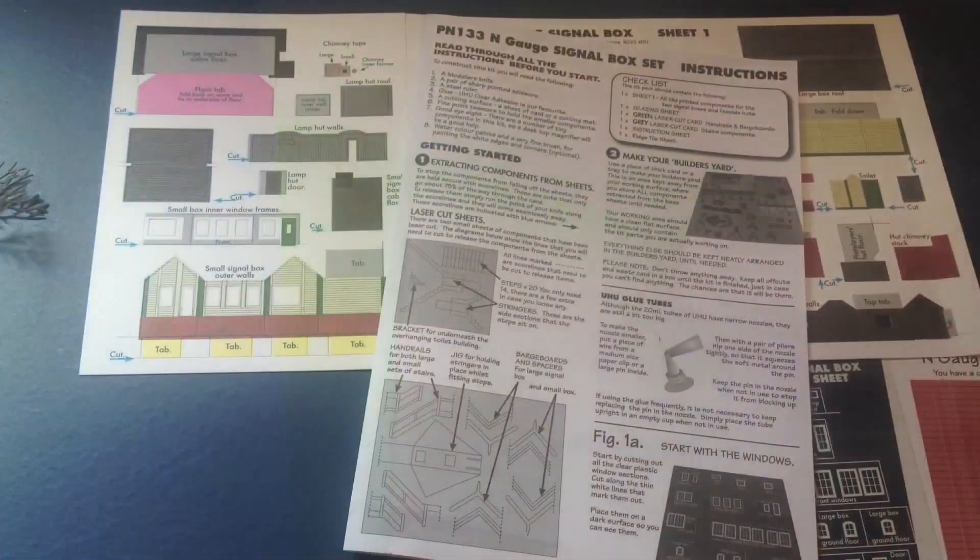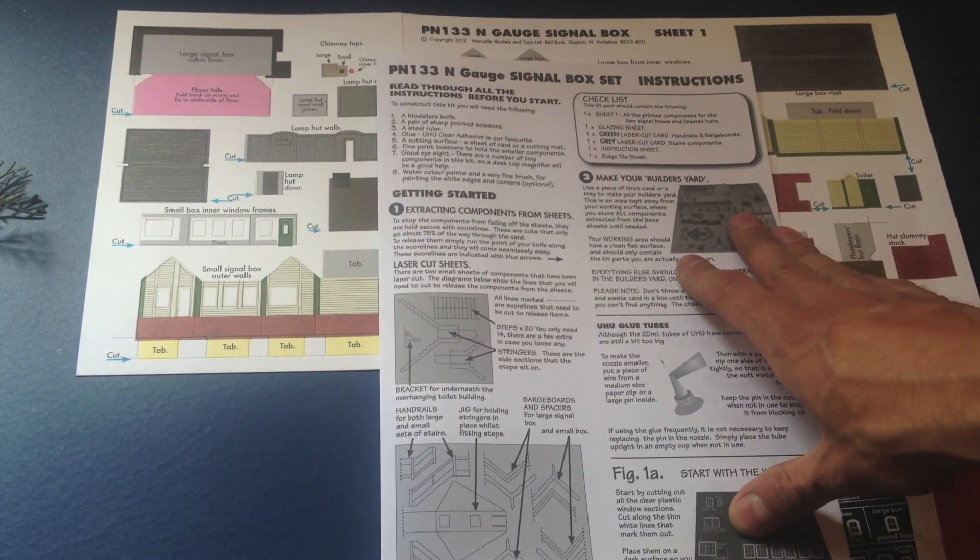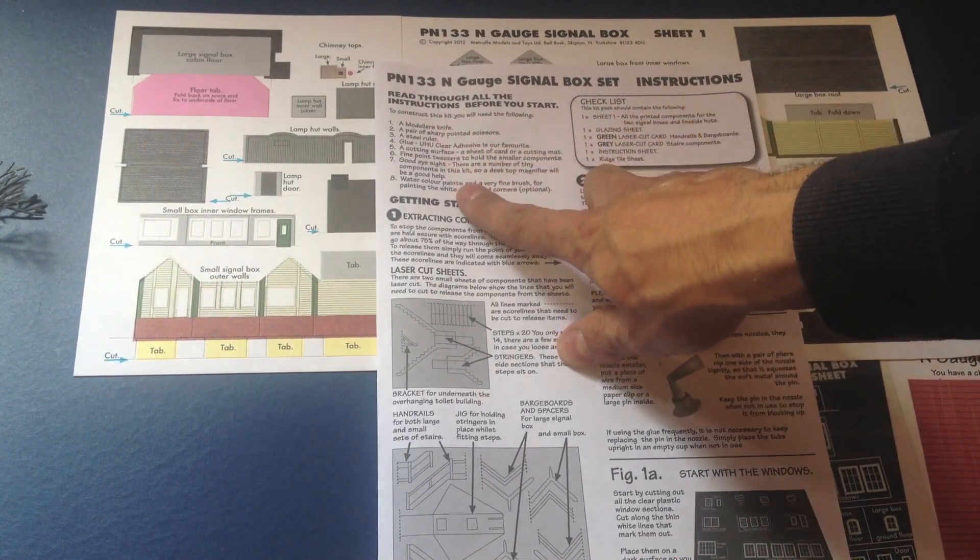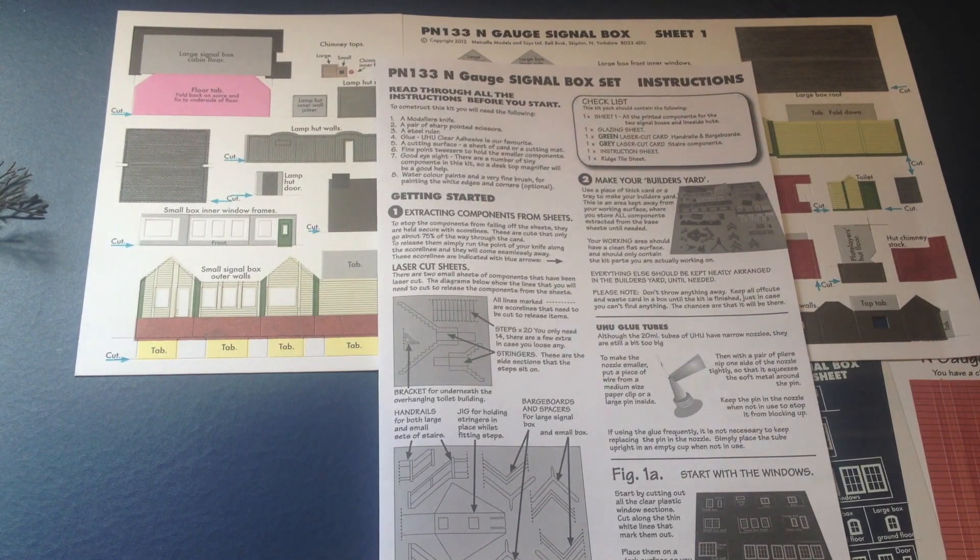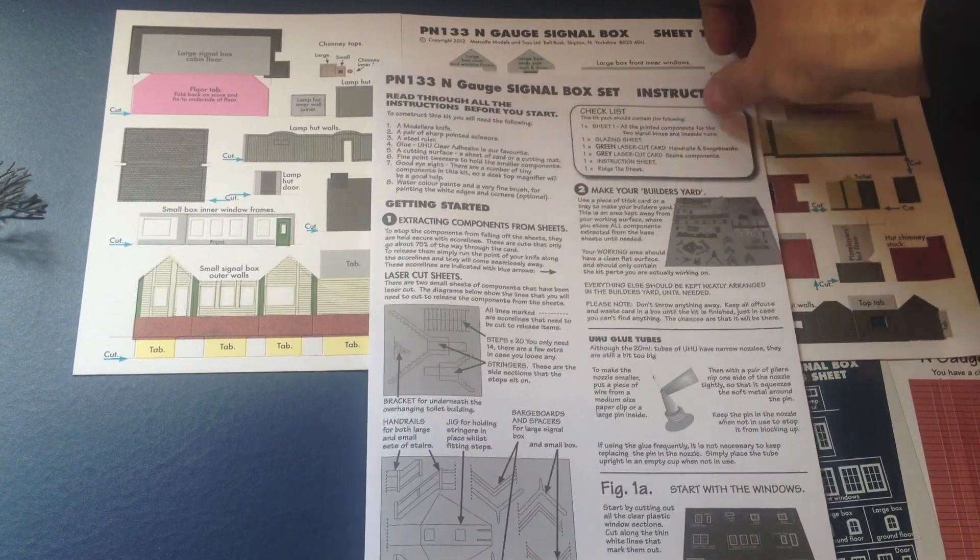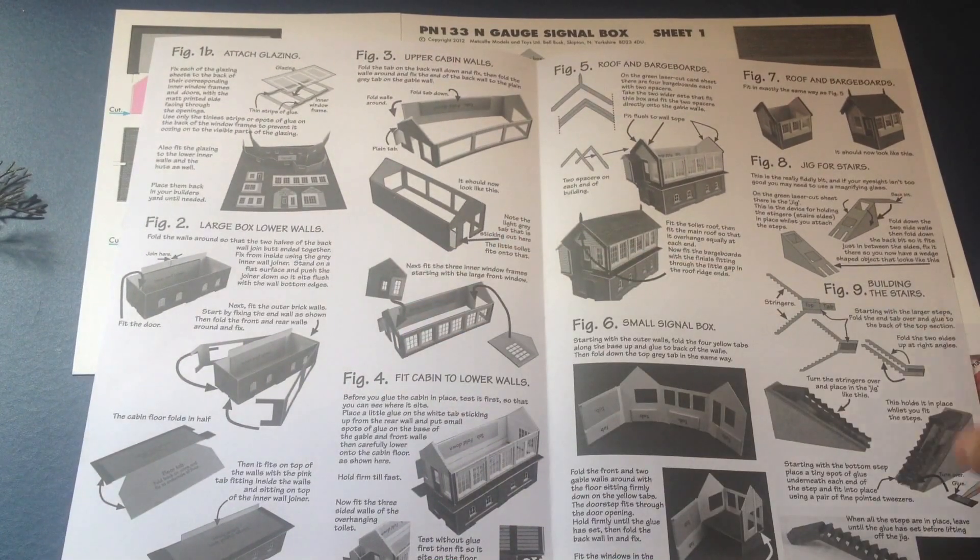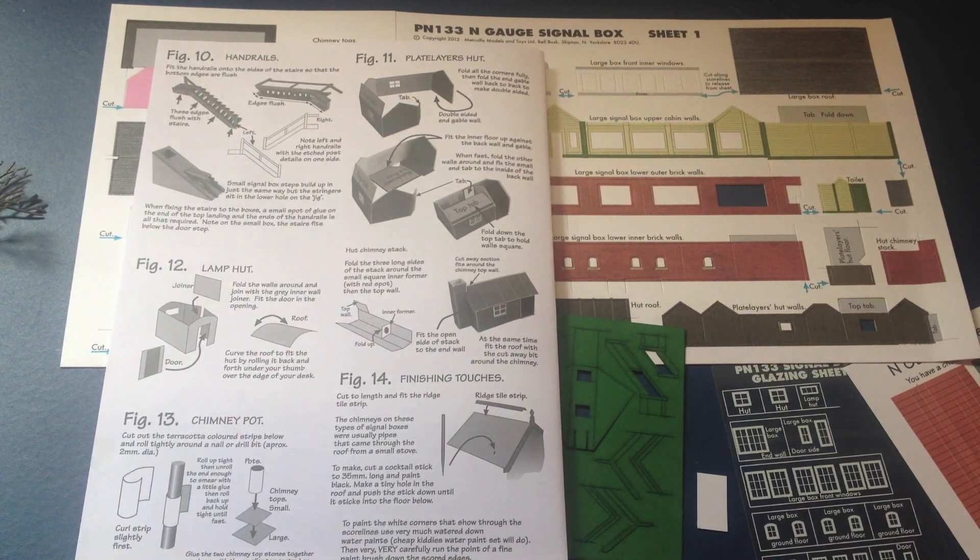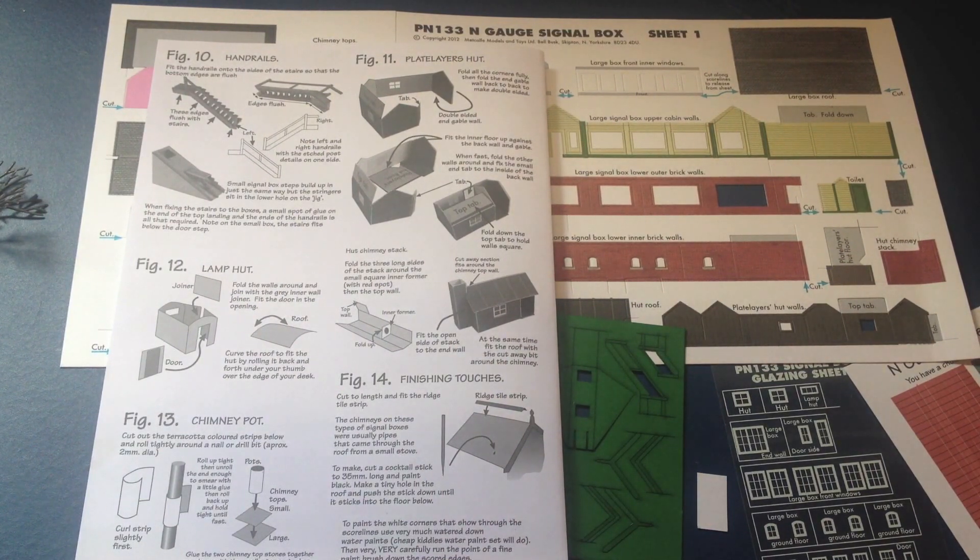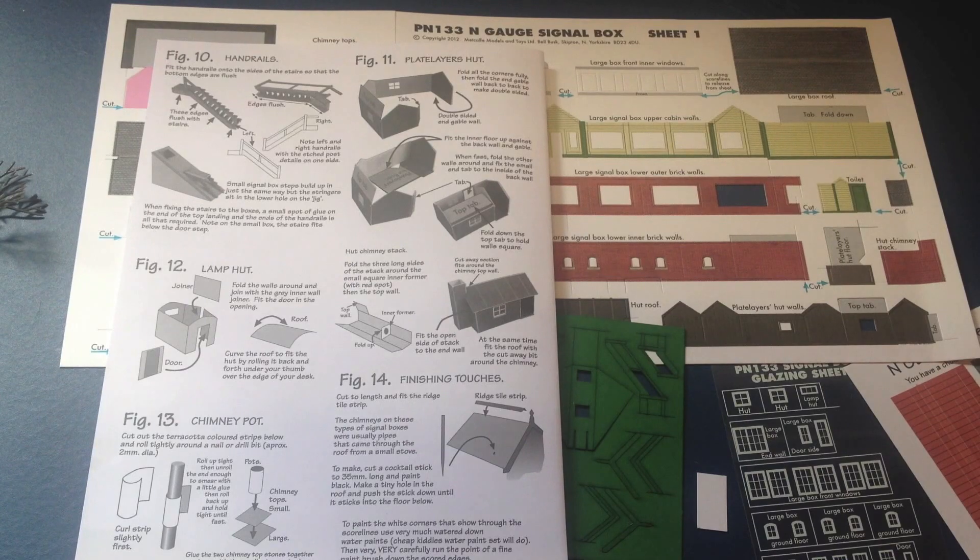So let's open it up and see what we get inside. Okay, so this is what we get. We'll start with the instructions which look fairly easy to follow. A little guide as to what you need there and instructions on how to extract the bits from the card sheets. So the entire instructions is that page, that double page, and that page there covers the entire kit: the little signal box, the huts, and the large signal box. So it looks like it's fairly straightforward to put together.